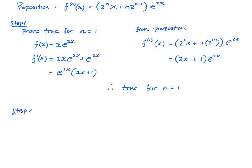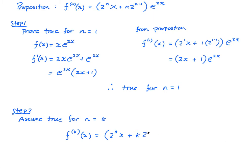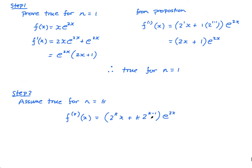Step 2: assume true for n equals k. So the kth derivative, f_k(x), is equal to (2^k · x plus k · 2^(k−1)) times e^(2x). We've assumed that.